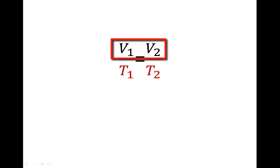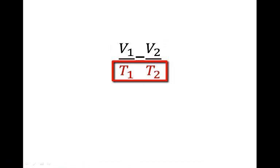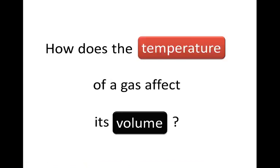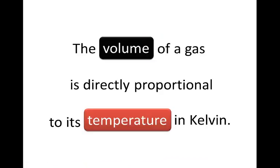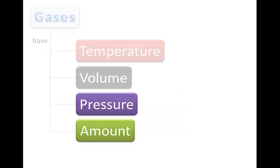And in this equation V1 and V2 must have the same unit as one another and T1 and T2 must both be in Kelvin. So how does the temperature of a gas affect its volume? The volume of a gas is directly proportional to its temperature in Kelvin. And this is Charles's law. Of course this is only true if the other variables pressure and amount of gas are constant.